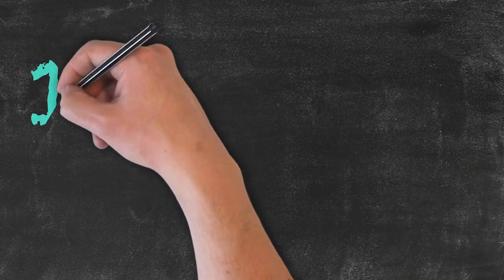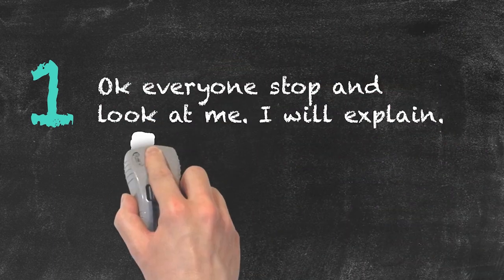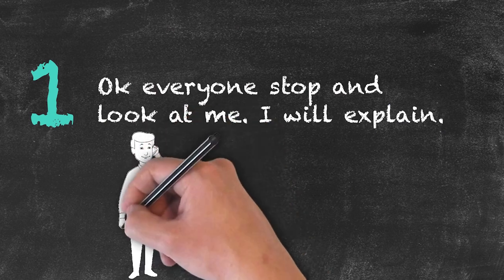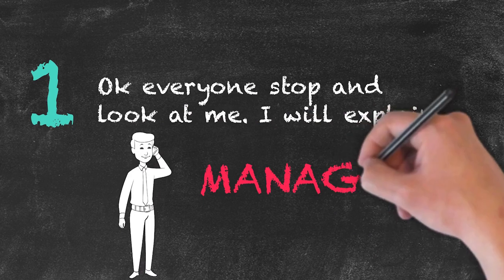So the teacher may say, for example, 'Okay everyone, stop and look at me and I will explain,' and the role of the teacher at that particular time is that of a manager. So the teacher is actually managing what is going on in the classroom.